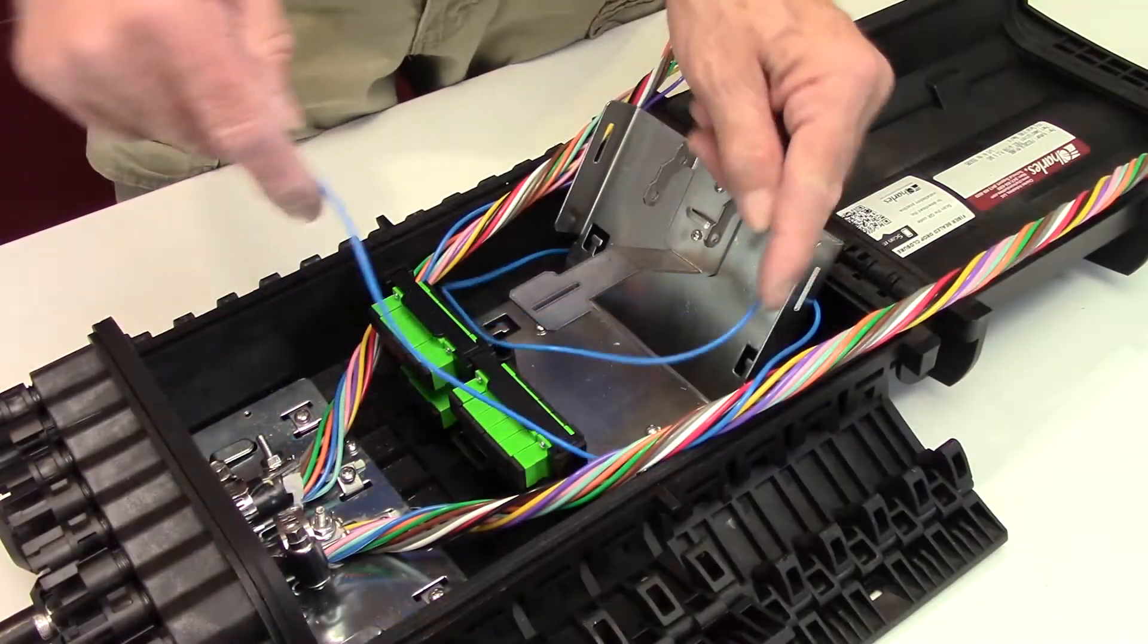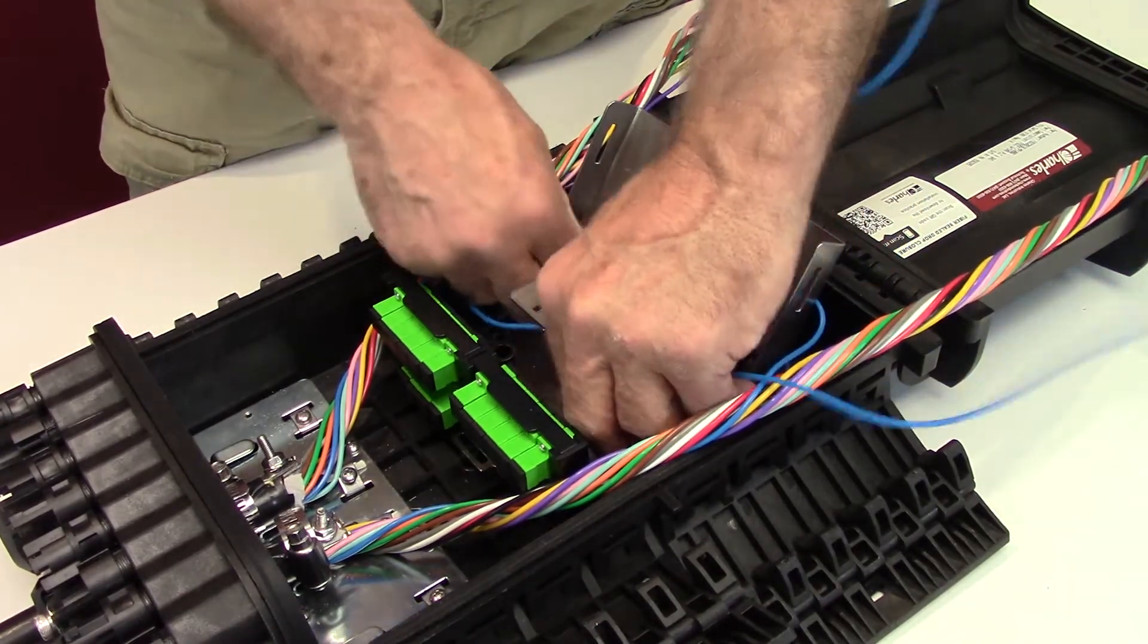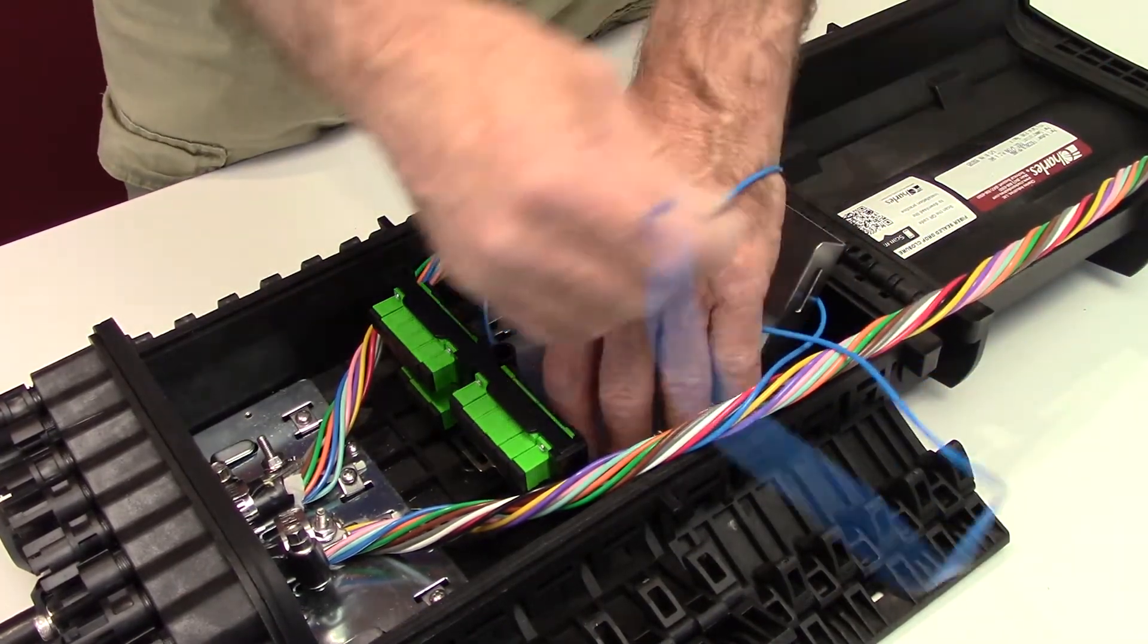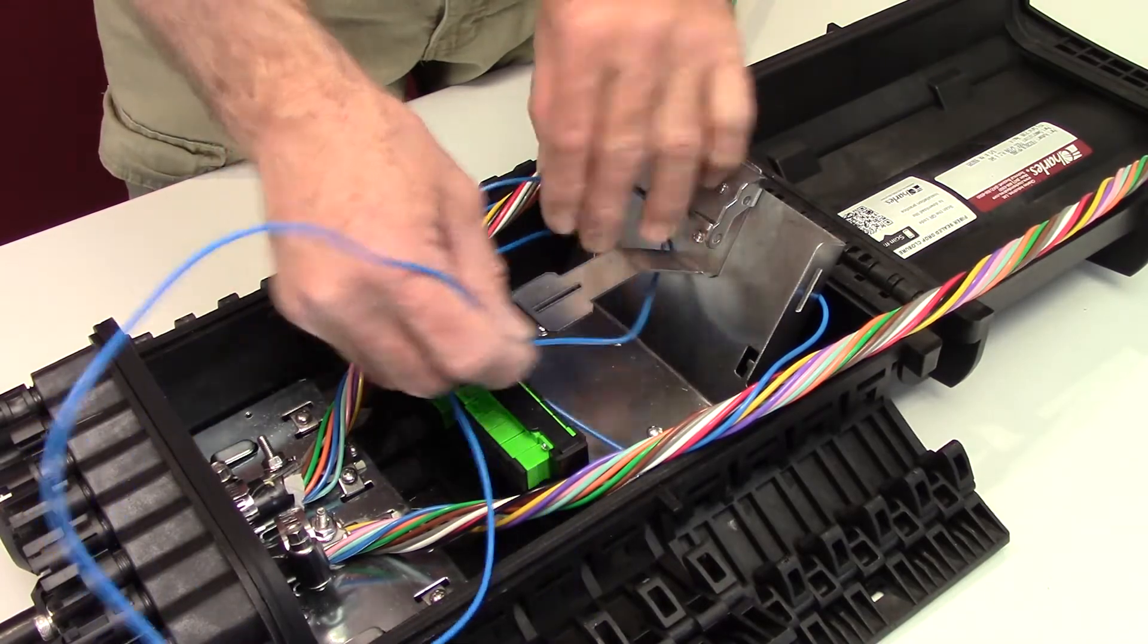After separating the assigned buffer tube, loop and store this tube to prepare for coiling the express buffer tubes inside the FSDC.